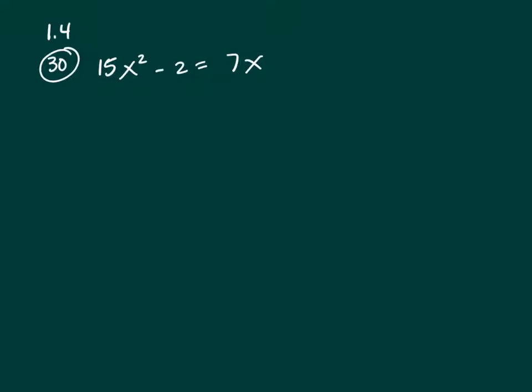This is a quadratic equation because the highest exponent on the variable is a 2. The first thing you need to do is get 0 on one side. So 15x squared minus 7x minus 2 equals 0.